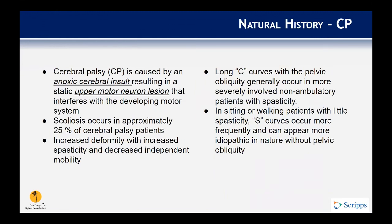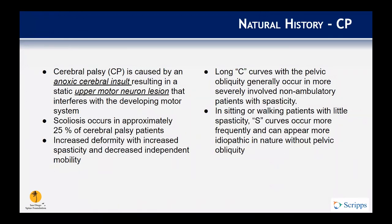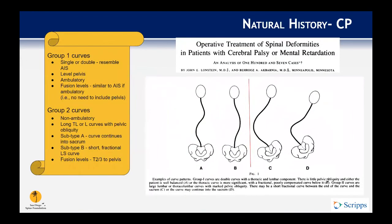Cerebral palsy is the most common type of neuromuscular scoliosis. It is caused by an anoxic brain insult resulting in a static upper motor neuron lesion that interferes with a developing motor system. Scoliosis occurs in 25% of these patients, and increased deformity correlates with increased spasticity, often leading to decreased independent mobility. More severely affected non-ambulatory patients often have long C-shaped curves with pelvic obliquity, while sitting or walking patients typically have S-type curves similar to adolescent idiopathic scoliosis.